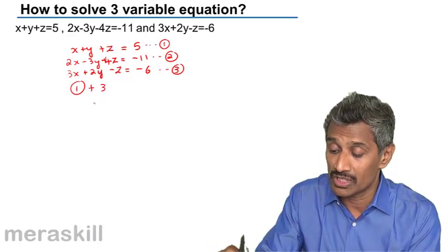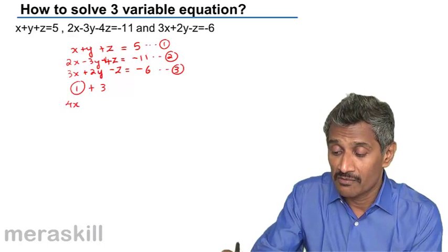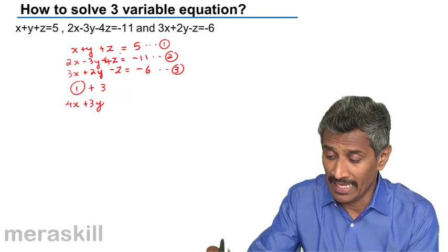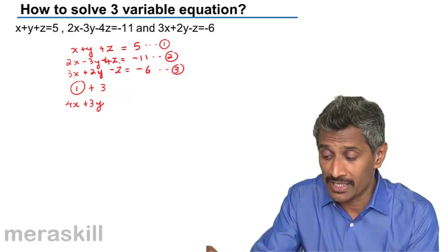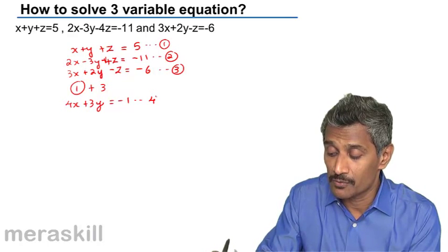When you add 1 and 3, left-hand side is x plus 3x is 4x, y plus 2y is 3y, and z minus z is 0. 5 minus 6 is minus 1. So you get this as equation 4.